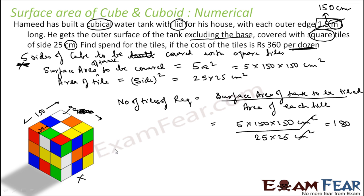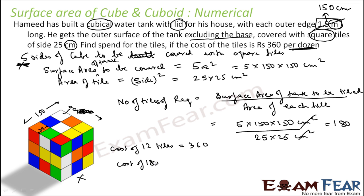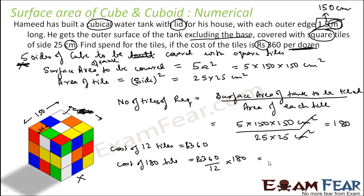Now we have to find the cost. Cost of 12 tiles is 360 rupees (one dozen). Therefore, cost of 180 tiles will be (360 ÷ 12) × 180 — that is cost of one tile times 180. The unit is in rupees.